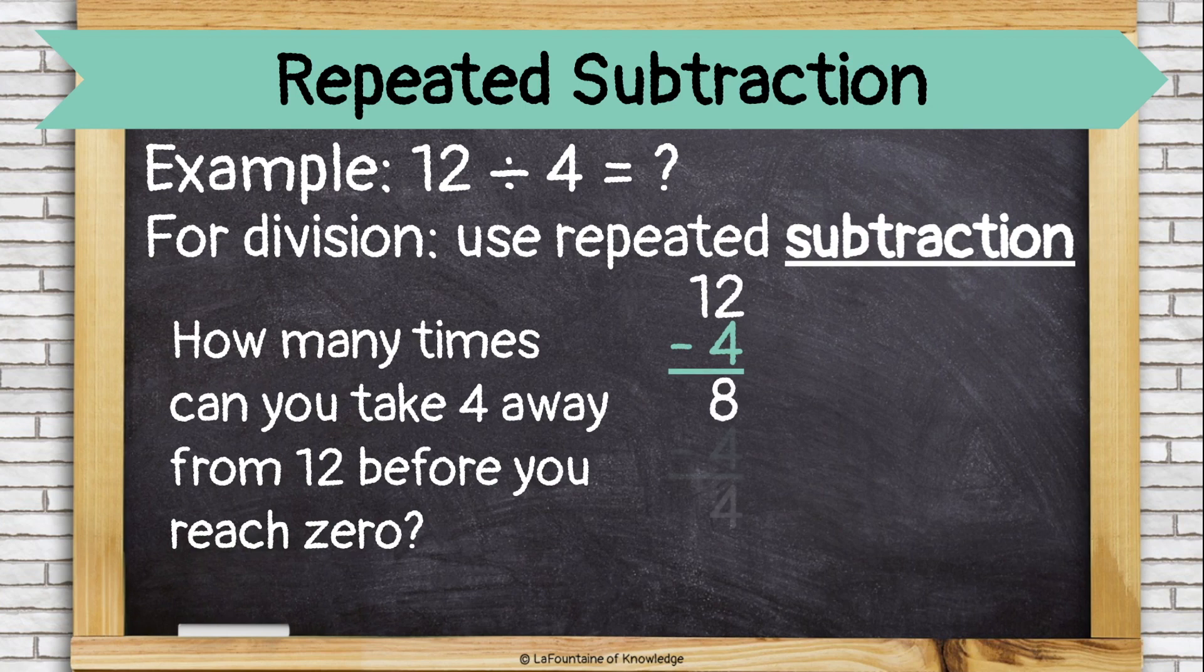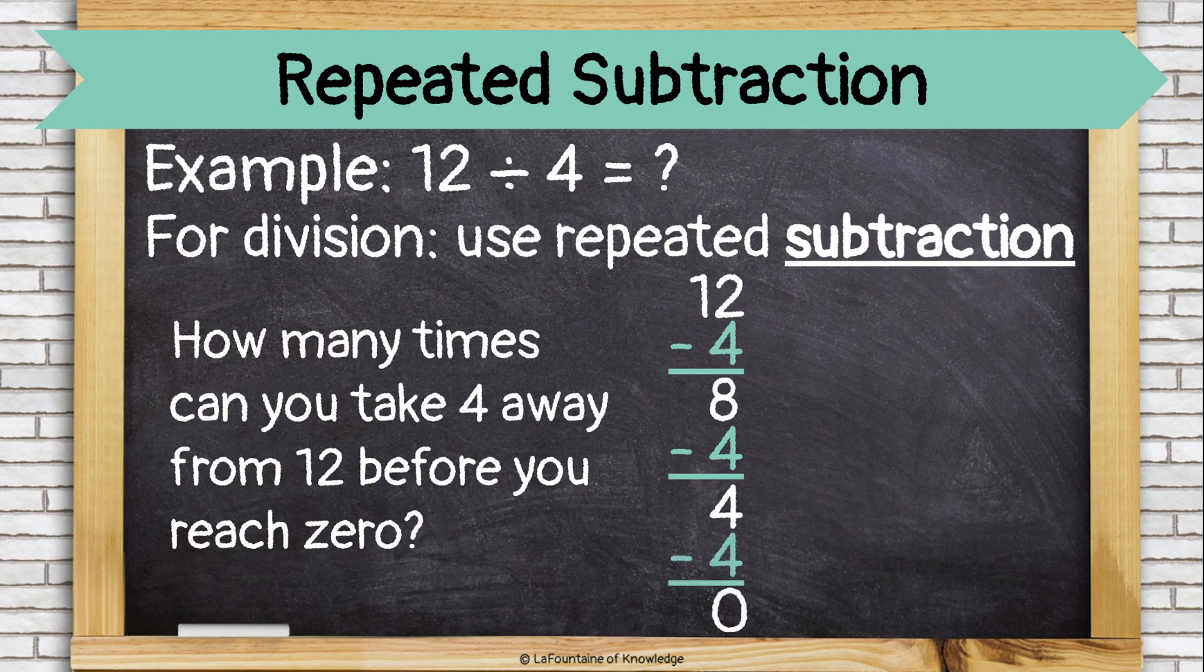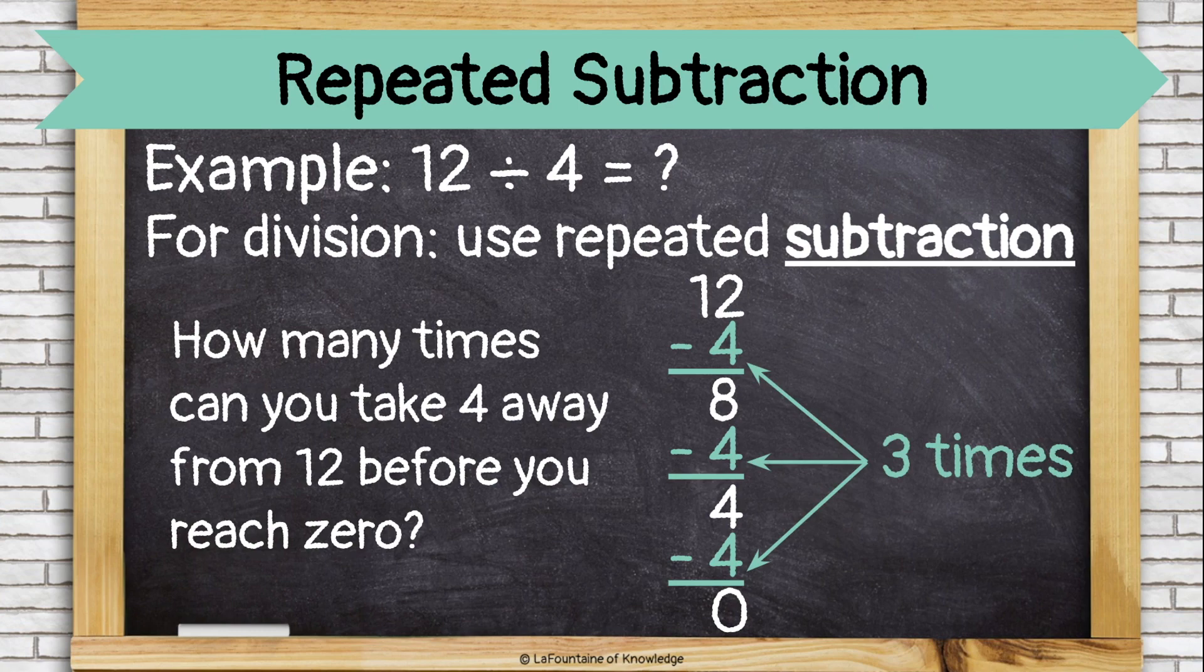We're not at zero yet, so let's take away another four. Now we're at four. Still not at zero, so let's take away another four and that brings us to zero. How many times did we subtract four? Three times. Twelve divided by four equals three.